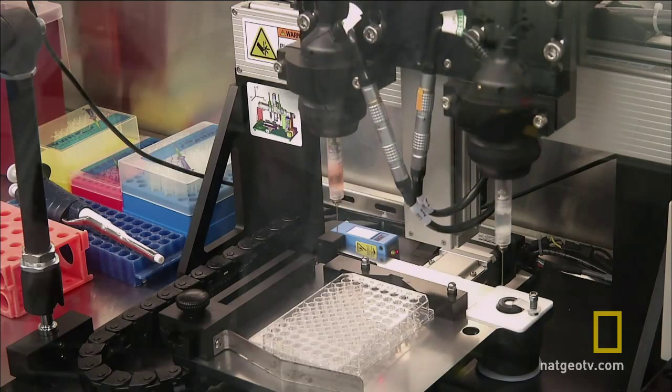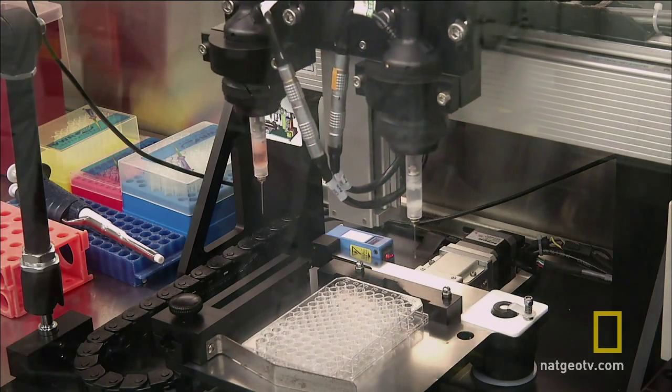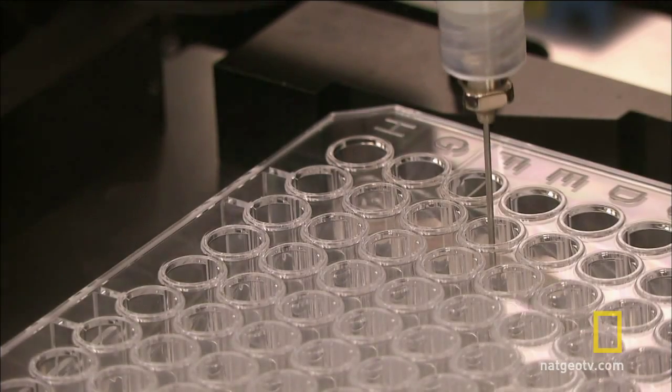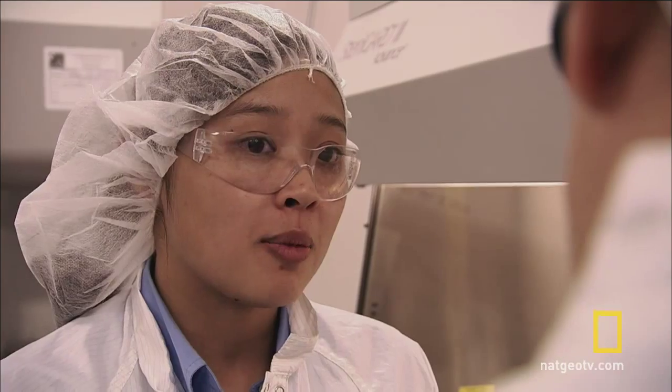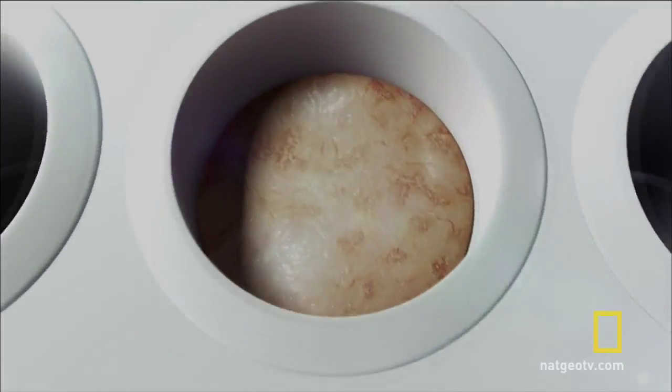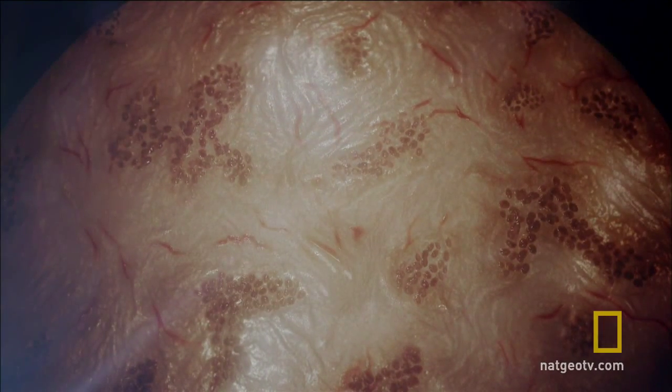That's one of the great powerful things about 3D printing is that we have the ability to control exactly where the cells go. We can put them exactly where we want to go and then we're relying on them to do what they know how to do and form tissues. That's one of the amazing things about this process.